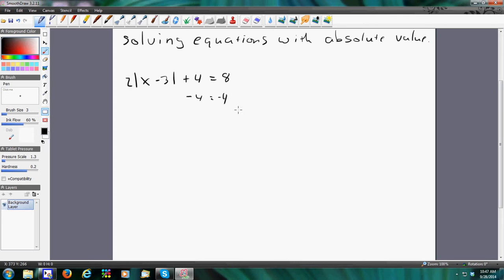So I'm going to subtract 4 from both sides. And I get 2 times the absolute value of x minus 3 equals 4. Divide by 2. And then I get the absolute value of x minus 3 is equal to 2.